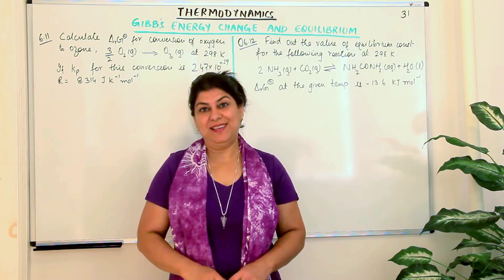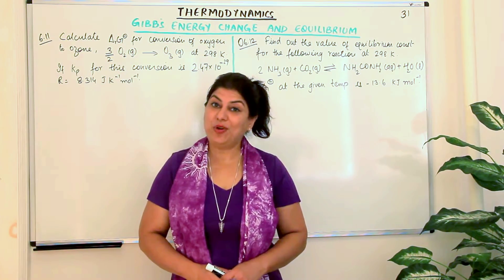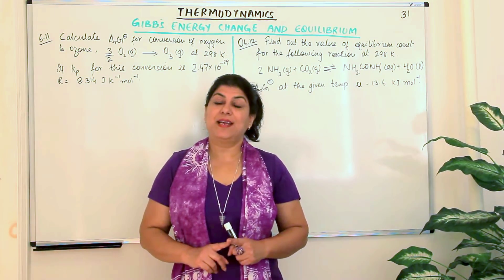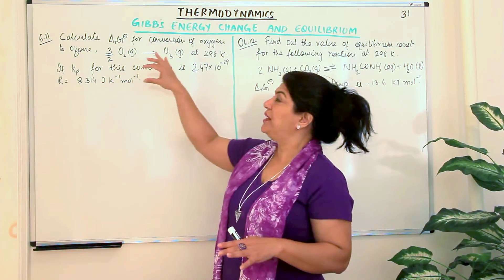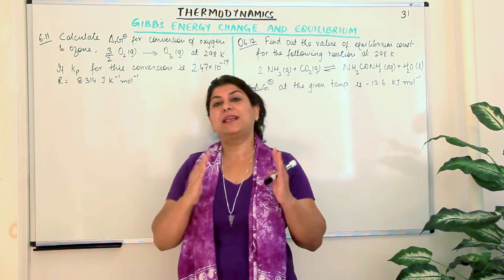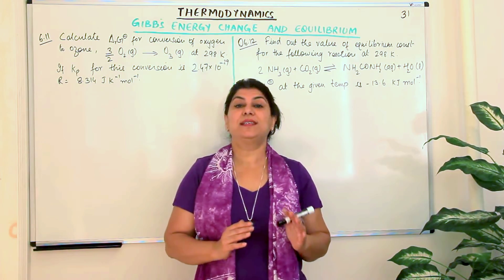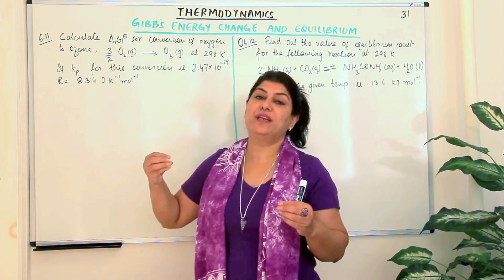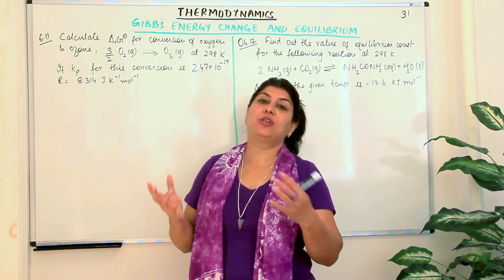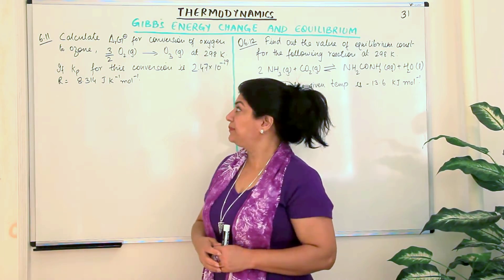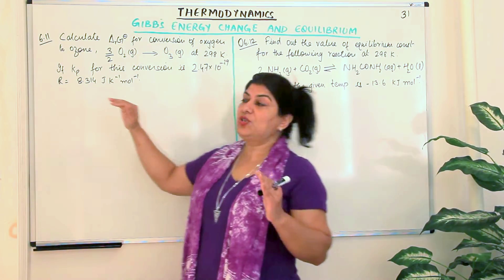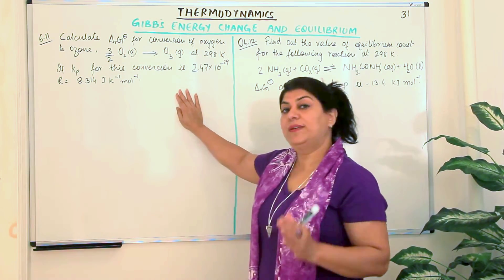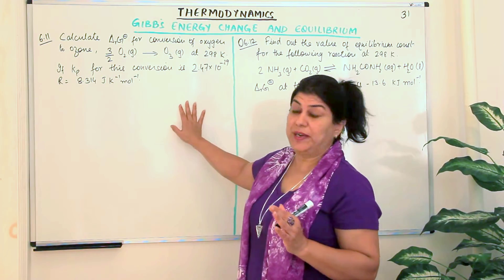Hello, I am Seema and welcome to part 31 of the chapter thermodynamics. Since we have not done chemical equilibrium as yet and we have related Gibbs free energy to chemical equilibrium, it is important that I do these three solved examples from your NCERT textbook exercise to make clear how we use the knowledge of Gibbs free energy to find out the equilibrium constant. The first question I'll be dealing with is question 6.11, a solved example from your NCERT text.